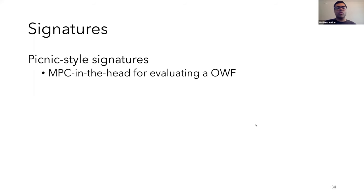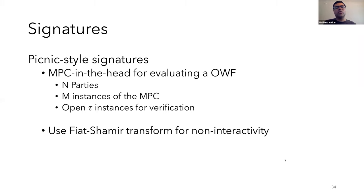The other application I'll discuss is signature schemes. So at a high level, given a one-way function and a distributed protocol for computing it, Picnic provides a generic method to construct a signature scheme from this using MPC in the head. So basically, you run M instances of an N-party protocol in your head, which computes the one-way function. And now you open tau of these instances, and they can be checked by the verifier. So opening here means that you reveal the transcripts of the parties in the MPC and allow the verifier to check that they're consistent. And finally, you can use the Fiat-Shamir transform to get non-interactivity in a standard way. Another thing to note here is that these signatures can be made post-quantum using other transforms.